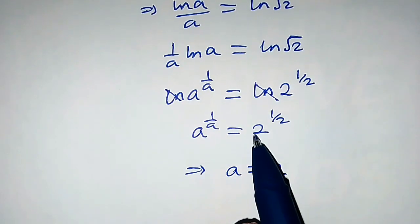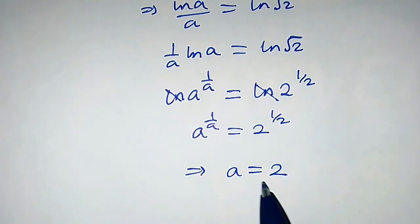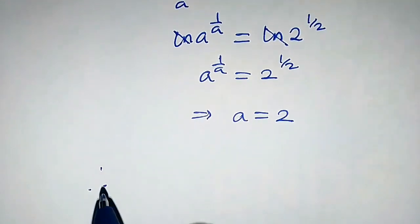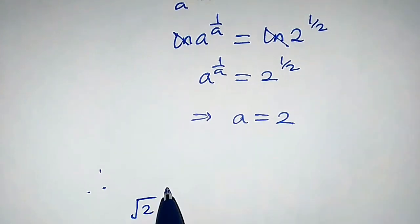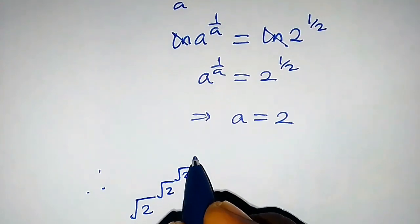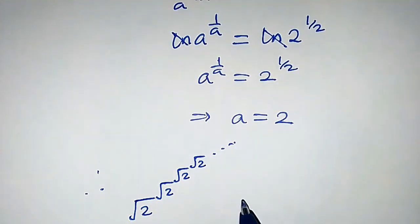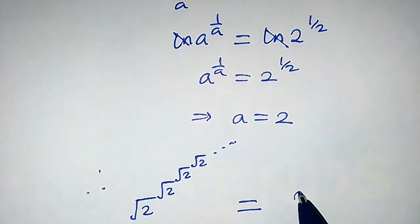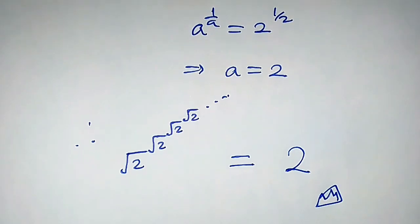Either we equate the bases or we equate the powers, and we get a equals 2. Therefore, square root of 2 to the power of square root of 2 to the power of square root of 2 to the power of square root of 2, on and on, equals 2 — which is our required solution.